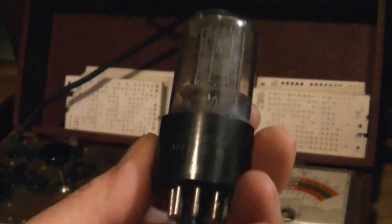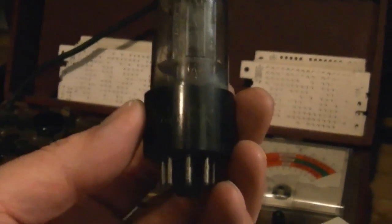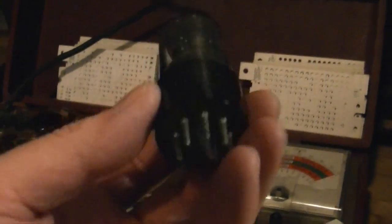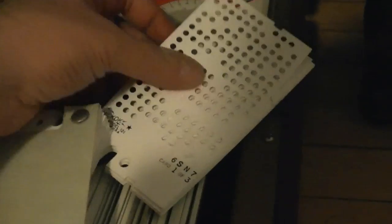Here's that 6SN7 that I put into the set. Just coincidentally happened to be an Admiral. It's a used tube, but it tested good. Now, in this tester it actually has three cards for the 6SN7. When I tested it I'm pretty sure I just used the first card.